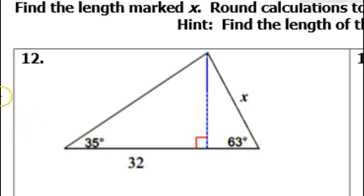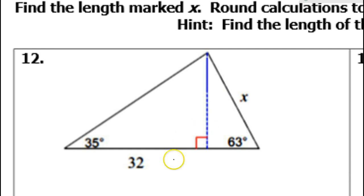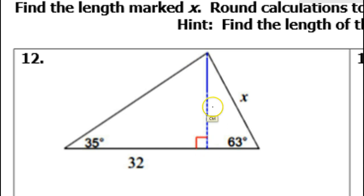In this video, I will show you how to find an unknown side when you have two right triangles connected like this. My hint will be to find the length of the shared side first. Let's call this shared side N.